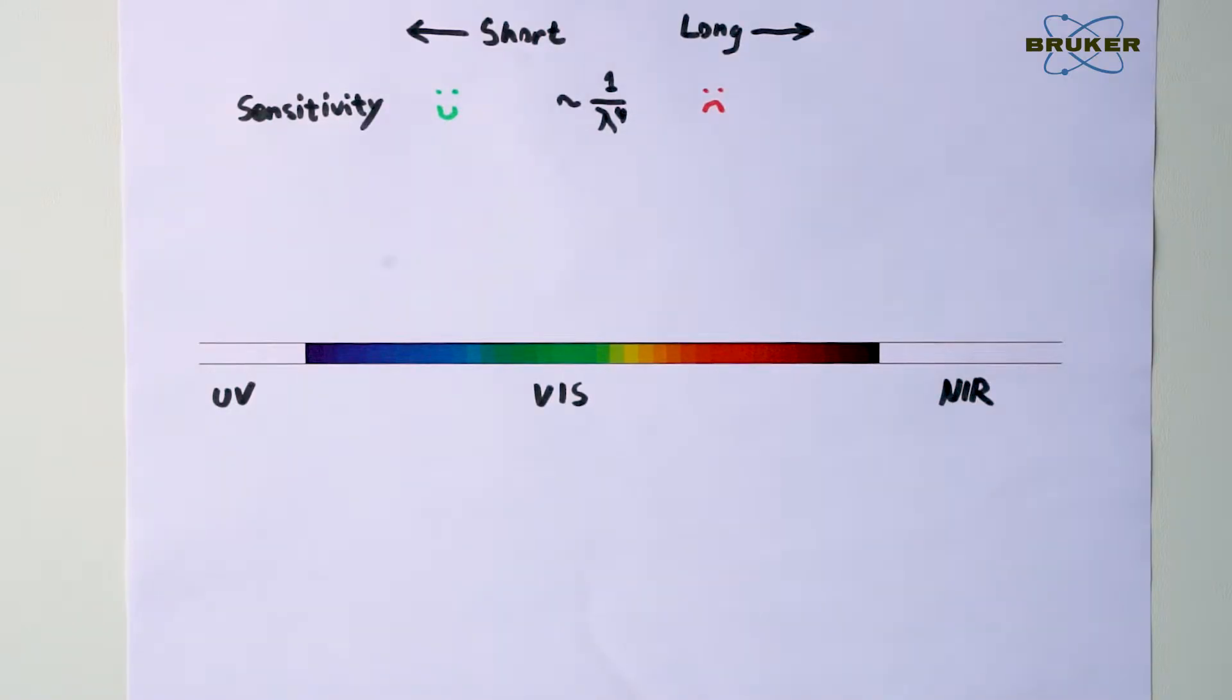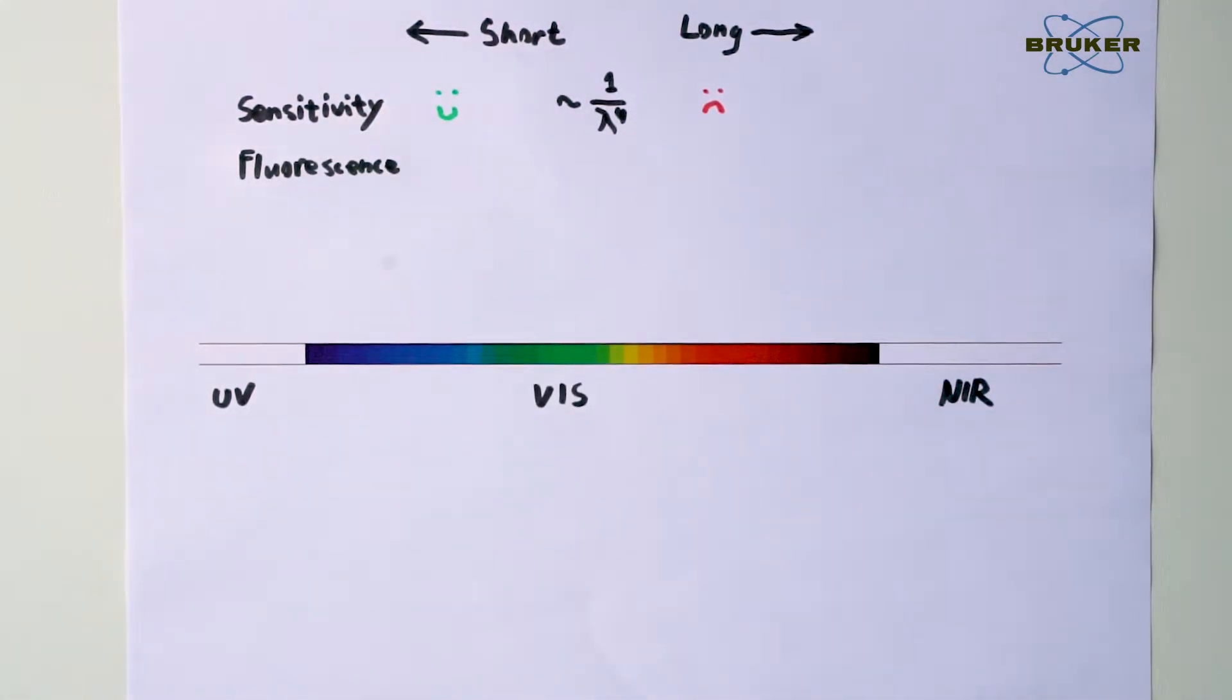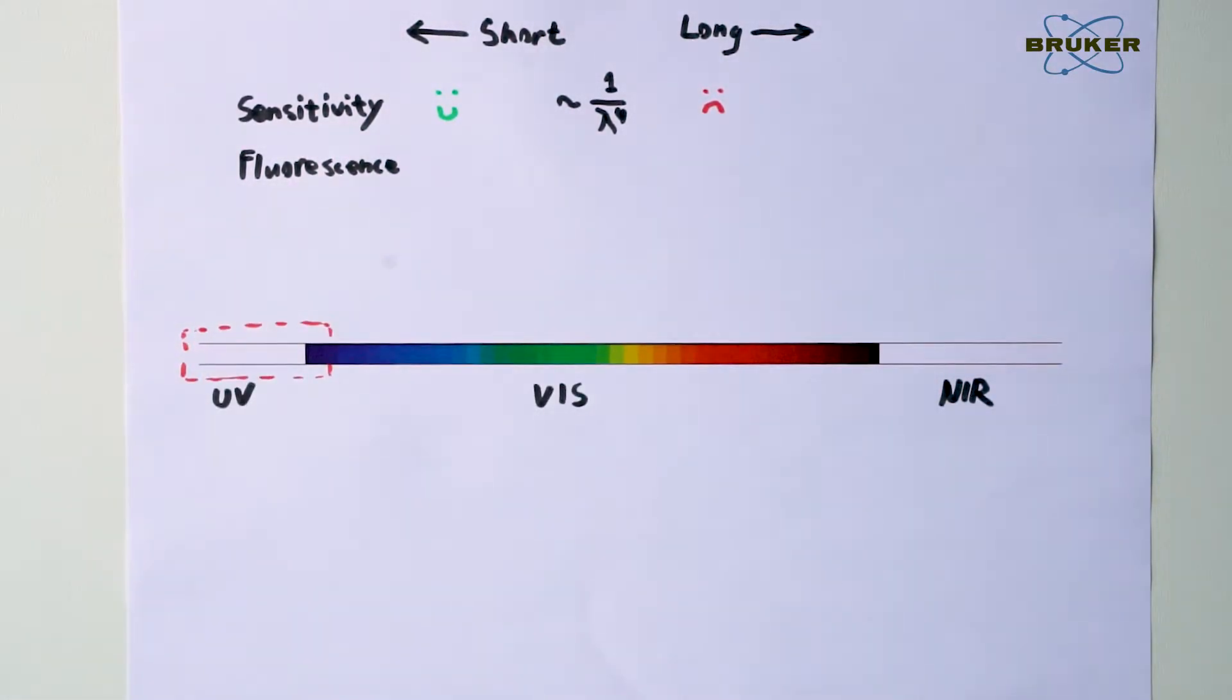But as stated, photons with shorter wavelengths have more energy and are therefore more likely to excite unwanted fluorescence. For this reason, violet or UV lasers are rarely used in Raman experiments.